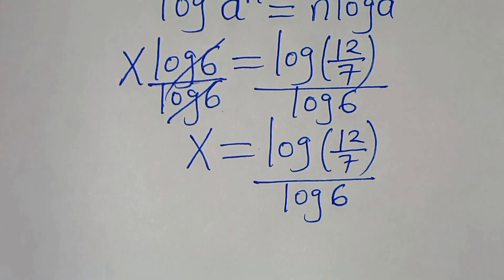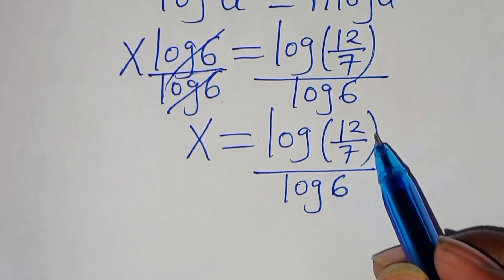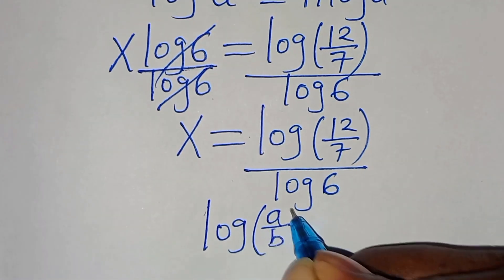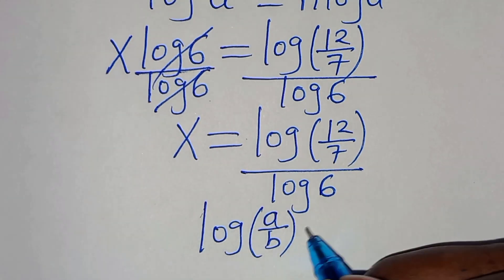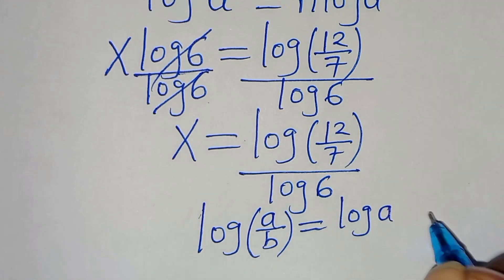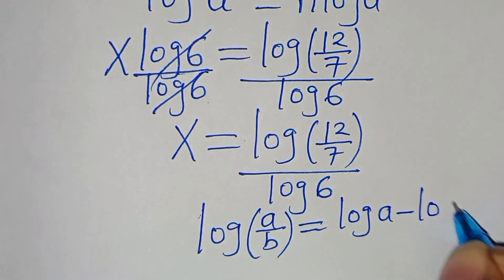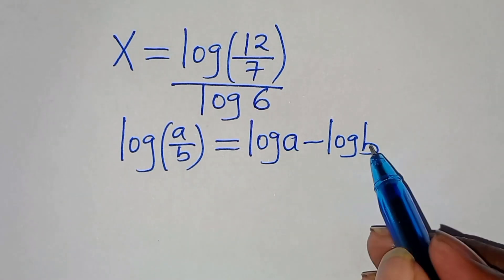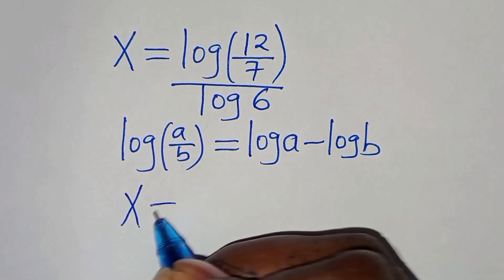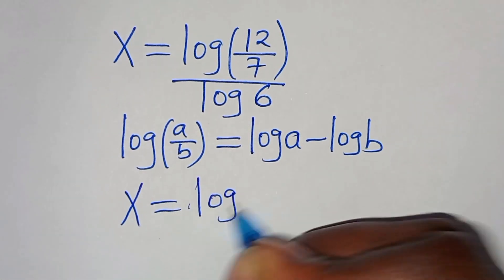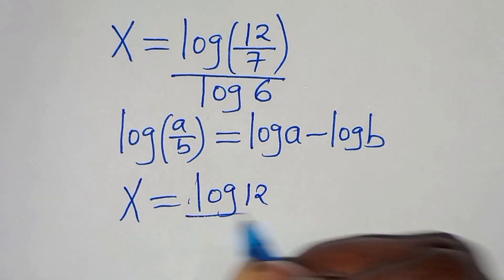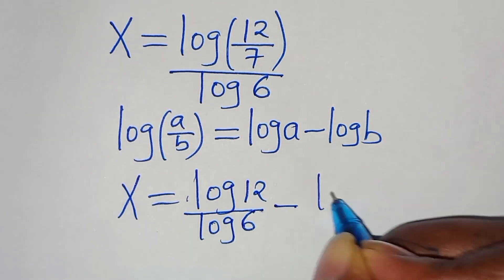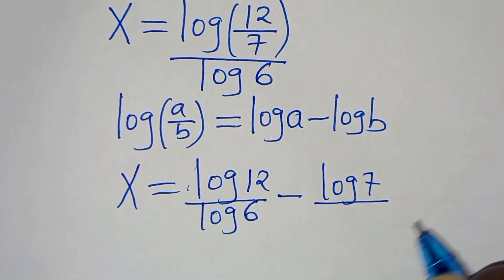The next step is that log(12/7) is in the form of log(a over b), which we can express as log a minus log b. Applying this property, we have x is equal to log 12 divided by log 6, subtract log 7 divided by log 6.